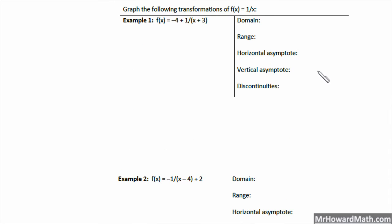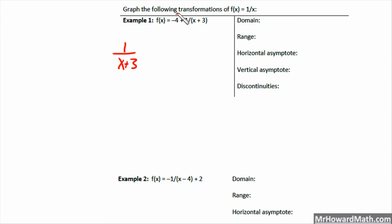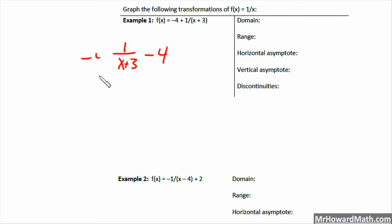For example 1, graph the following transformations of F of X equals 1 over X. I like to rewrite these with a horizontal division bar rather than a slash. So it would be 1 over (x plus 3) minus 4, with the subtract 4 written separately on the outside.